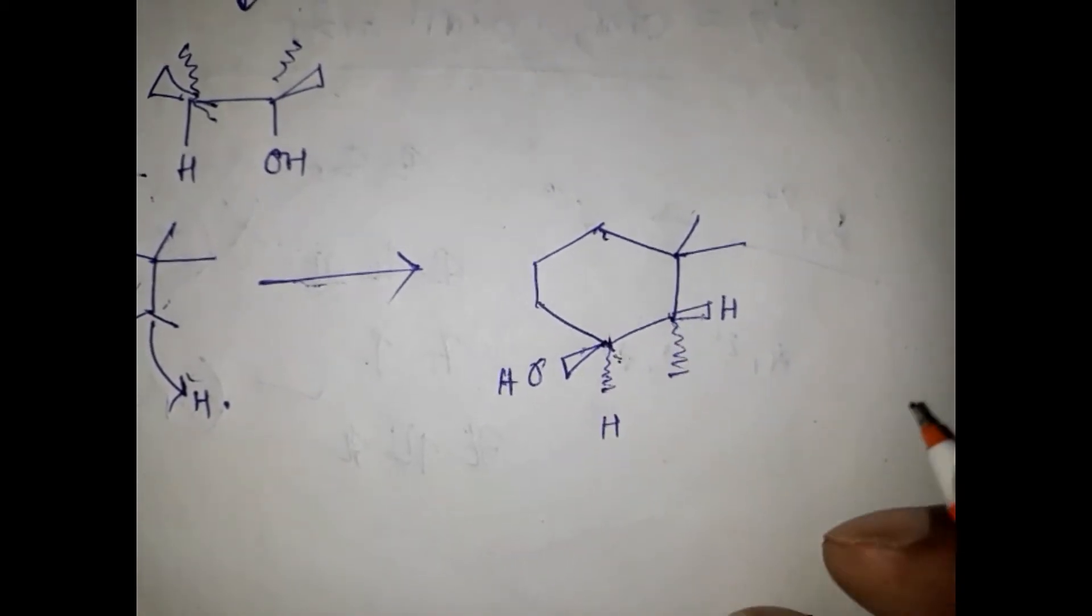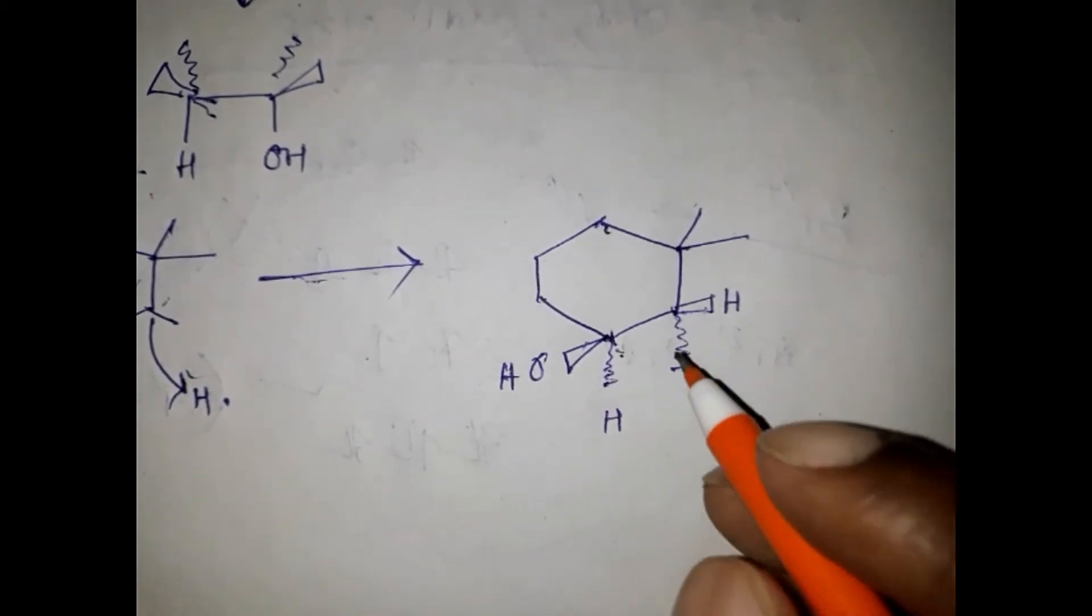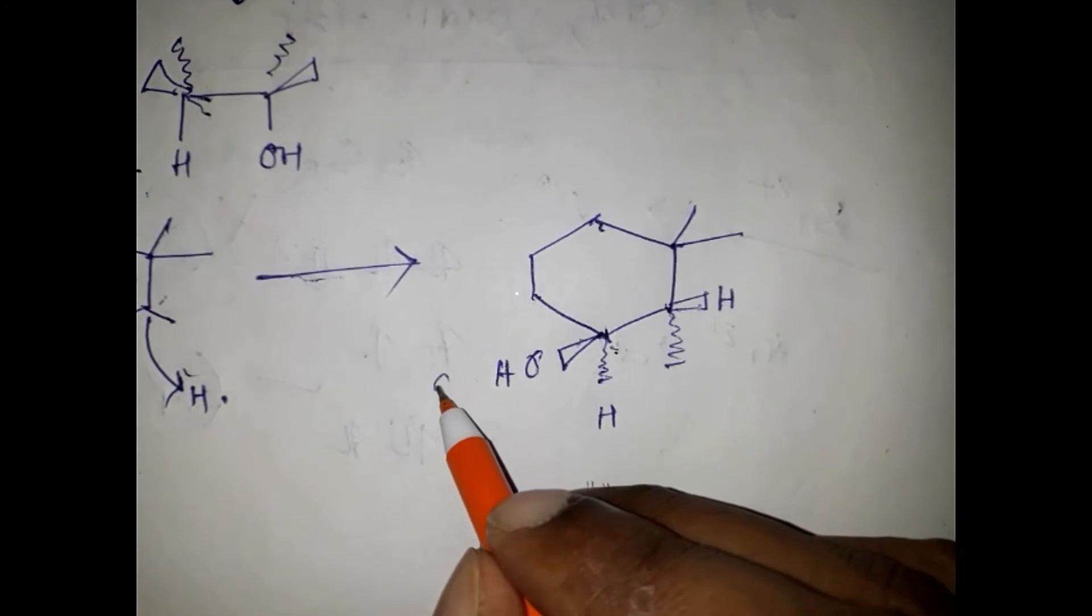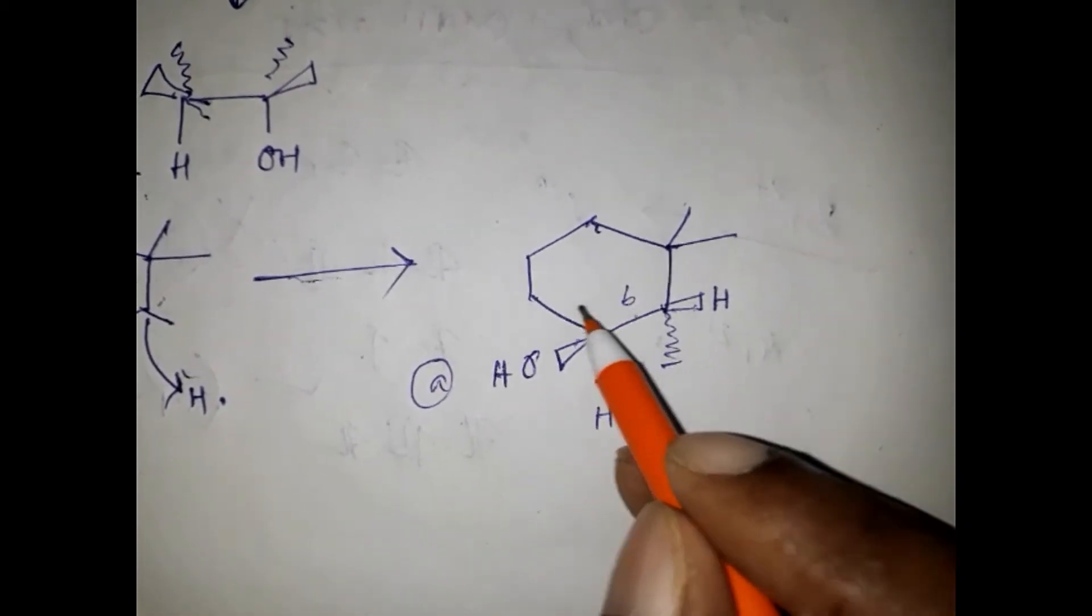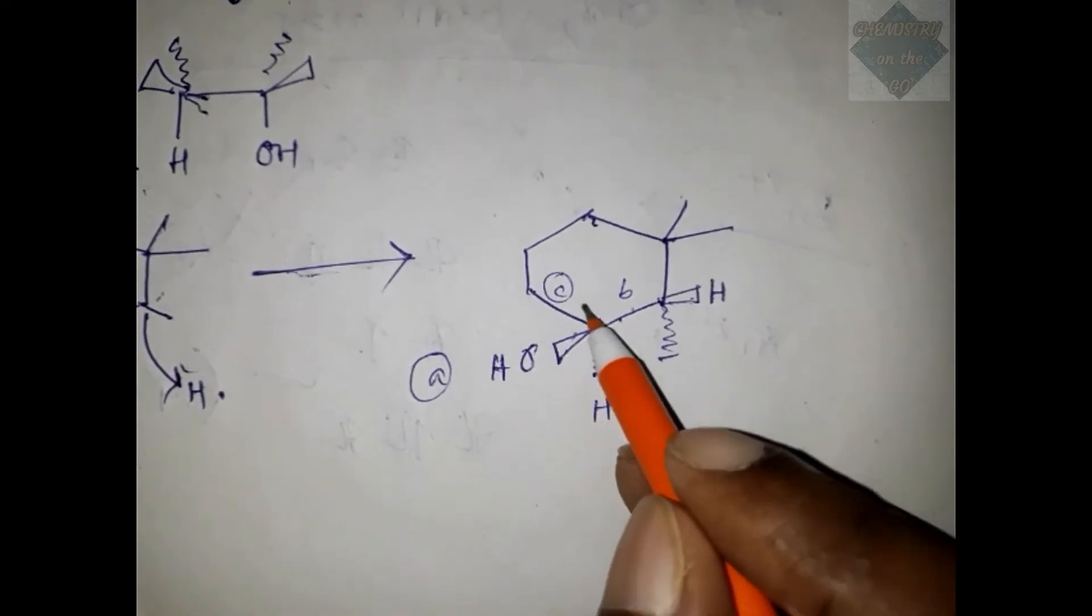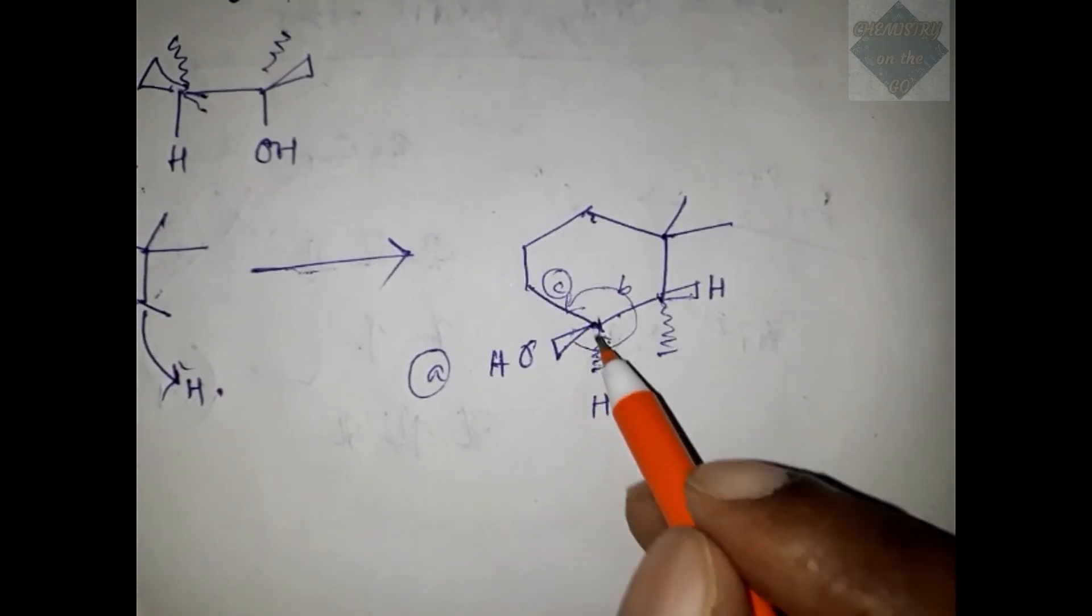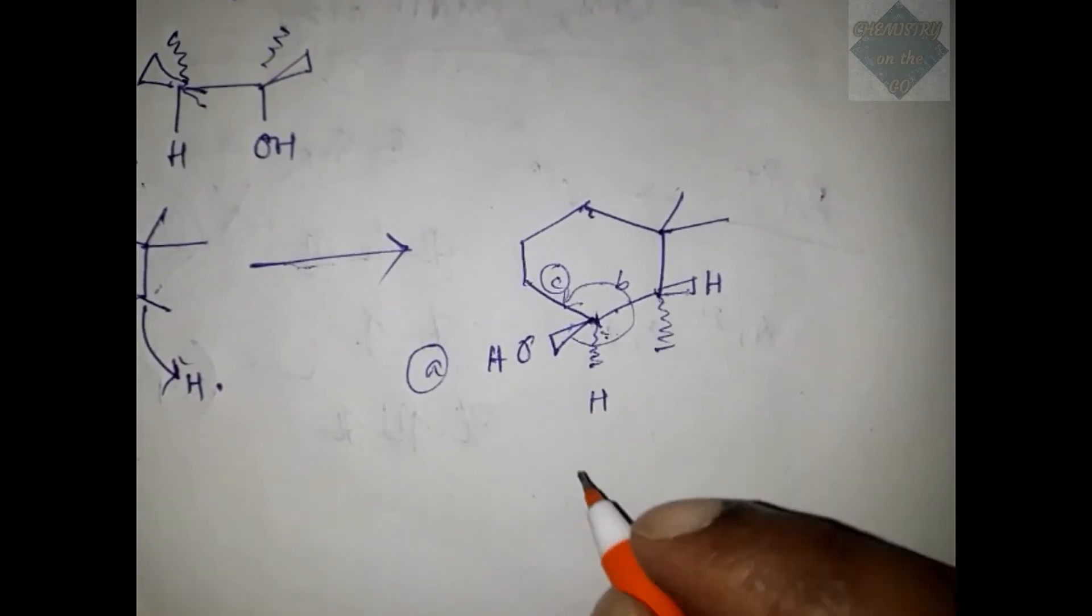First, we know that this will be priority A, this side will be B, this side will be C. So A, B, C—this will be anti-clockwise, and hydrogen is on the far side, so this will be an S center.